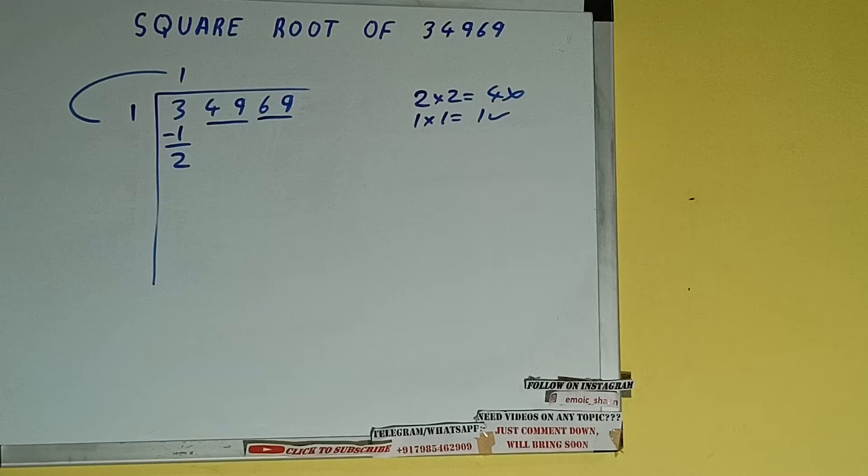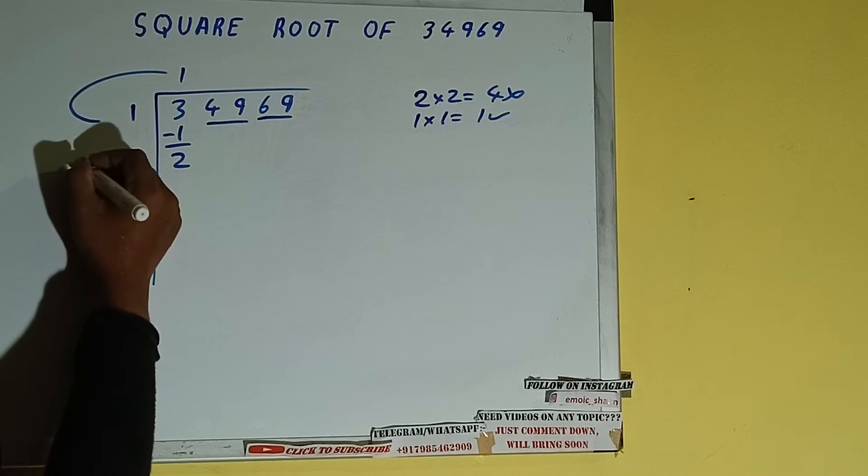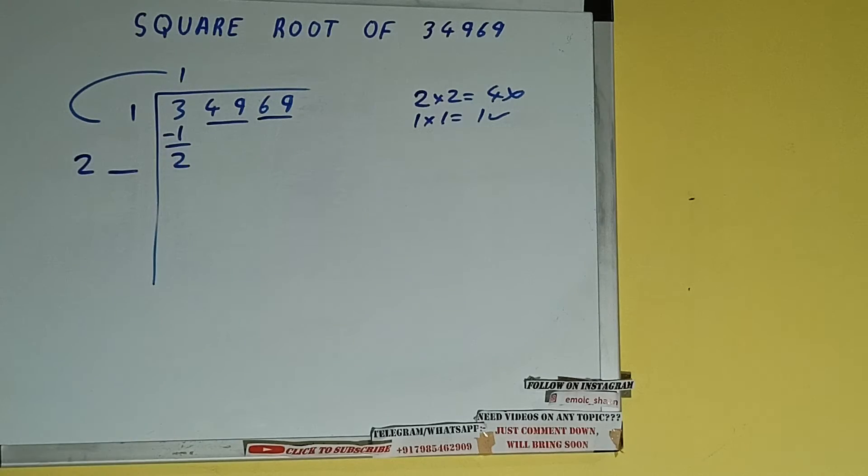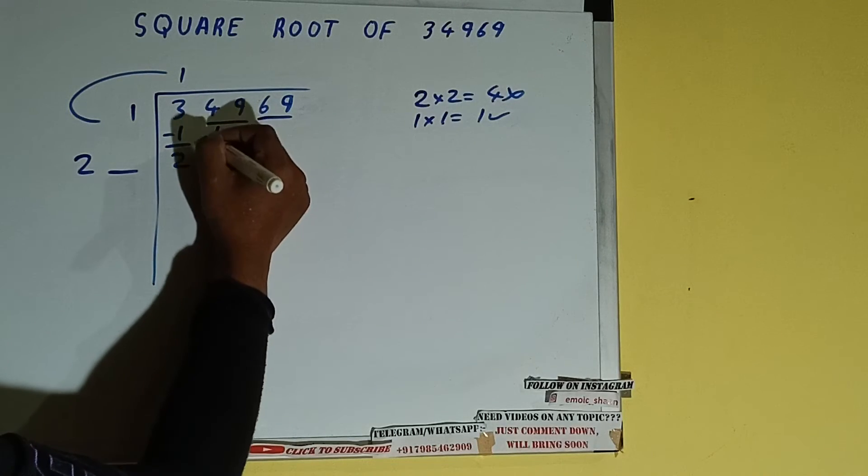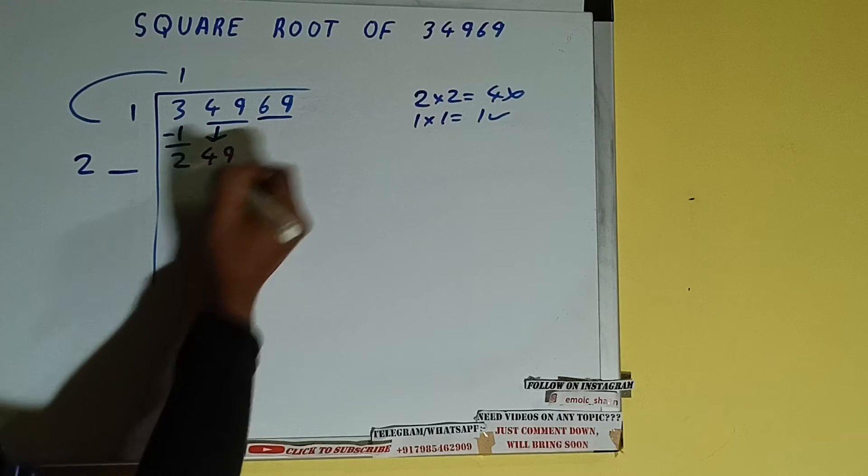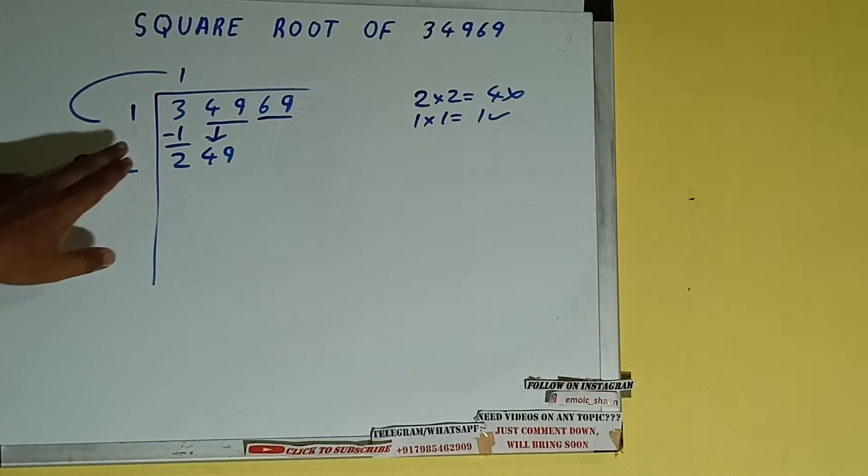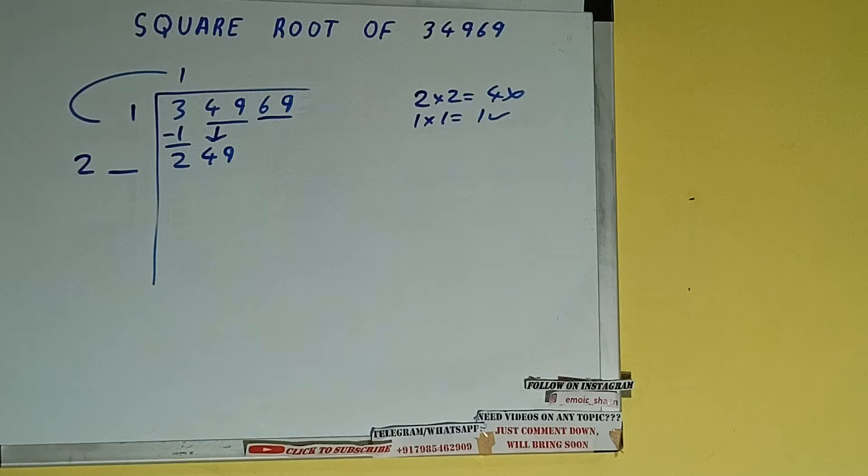So 1 here and 1 here. 1 subtract, 2 will be left. We did 1 into 1, so add both. So 1 plus 1 will be 2. Write it here and keep a digit extra, and this number we need to make it big. So bring the next pair down and it will be 249. Now whatever number we write here, we need to write here also.